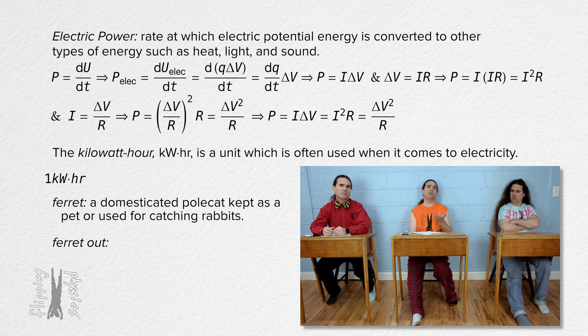An electric circuit is typically composed of electrical loops which can include items such as wires, batteries, resistors, lightbulbs, capacitors, switches, ammeters, voltmeters, and inductors. Each of those circuit elements is typically illustrated using standard symbols shown here. We will get plenty of opportunities to talk about all of these over the course of the next few lessons.